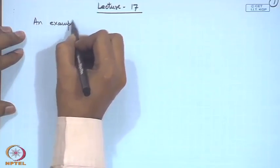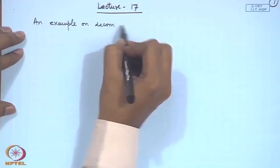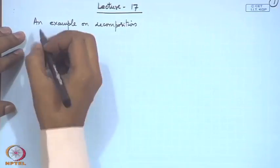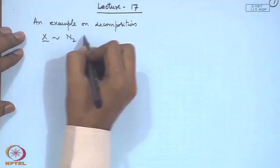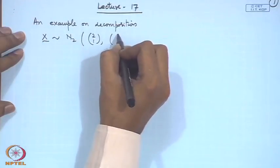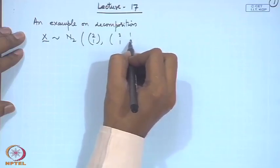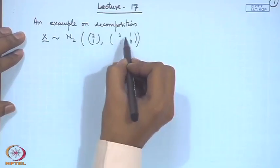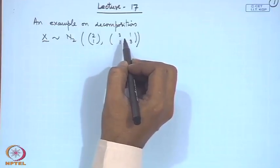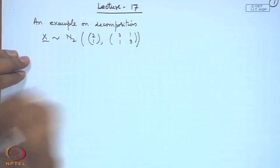Let us start with an example to illustrate this decomposition. Consider x following N2 with mean vector (2, 1) and variance-covariance matrix sigma = [[3, 1], [1, 3]]. This is a positive definite matrix, and this is a bivariate normal distribution.